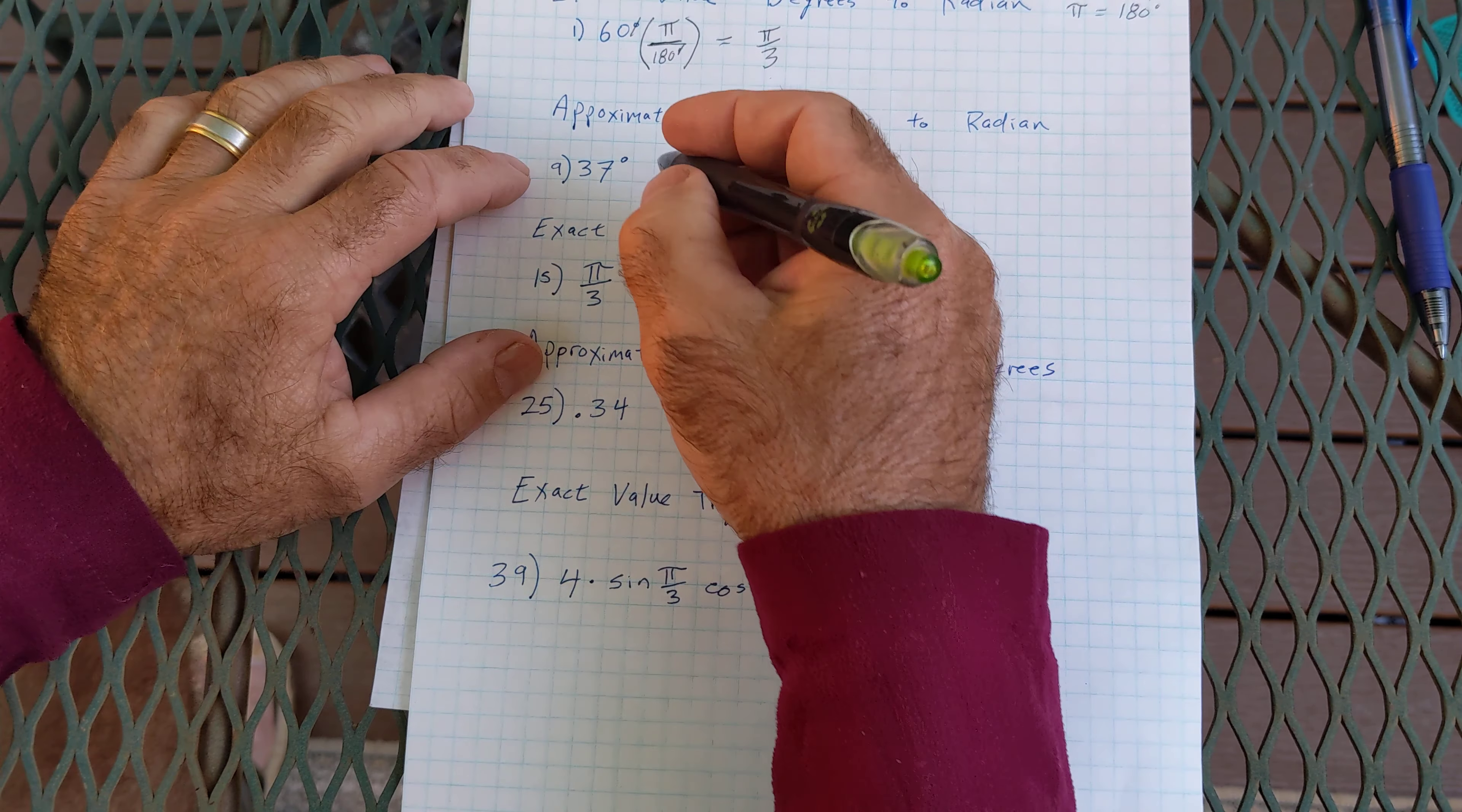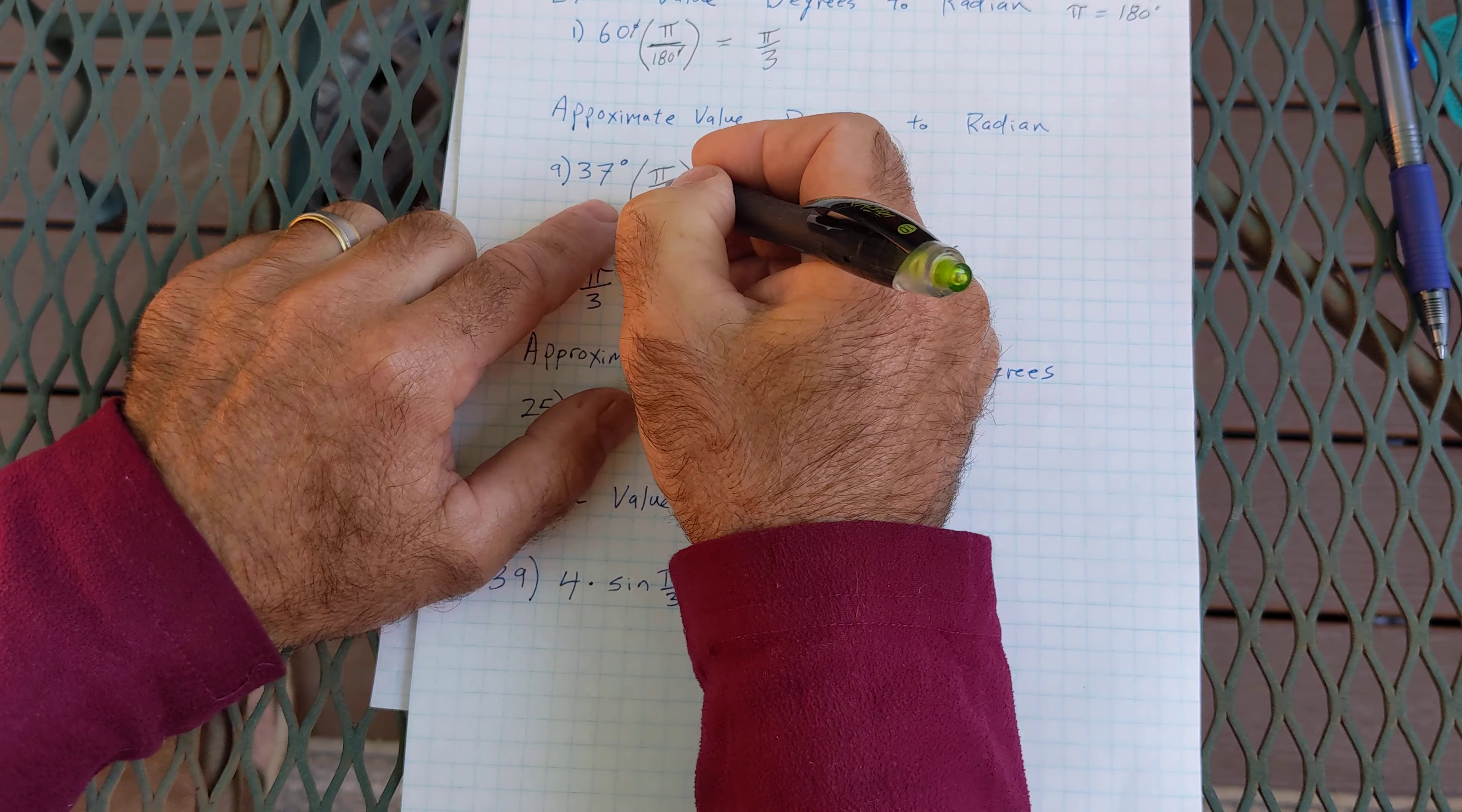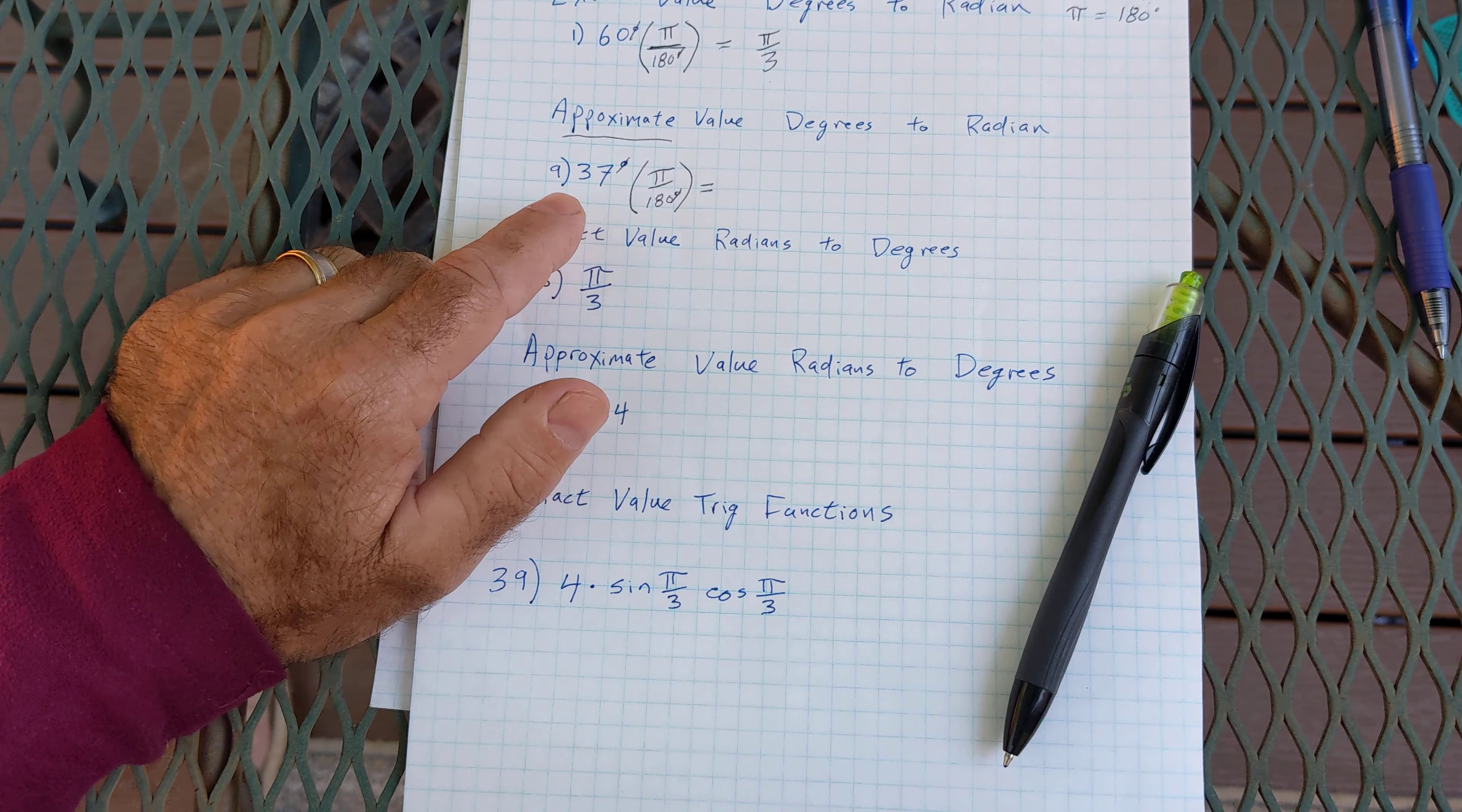Approximate value, degrees to radians, I'm going to multiply by the exact same thing, pi over 180. And then my degrees are still going to cancel. That's going to give me radians, but it's an approximate value. So now I'm using a calculator. Let me pause and find a calculator.